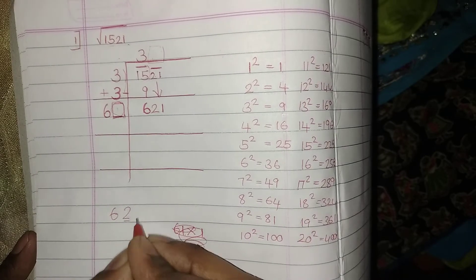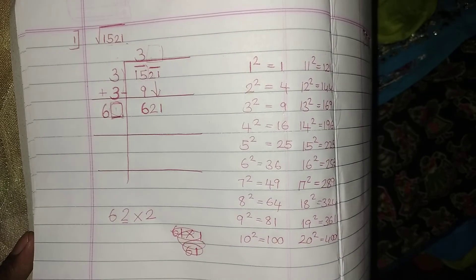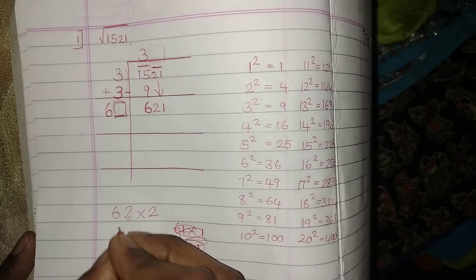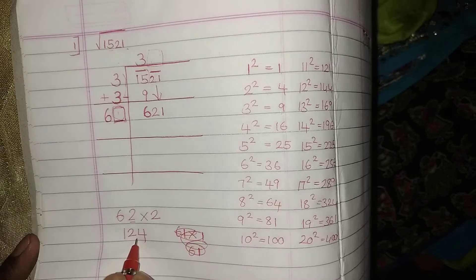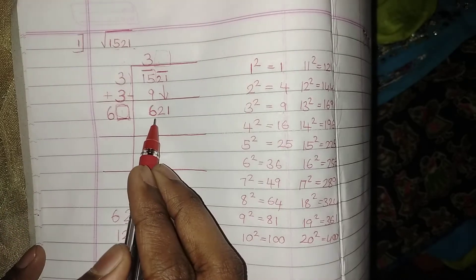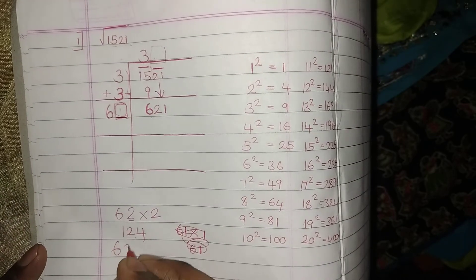Whatever I am writing here, the same should be another multiplicand. 62 into 2 will be getting as 124. 62 into 2 is 124. Again, this 124 is not equal to 621, like that we have to check with the next number.